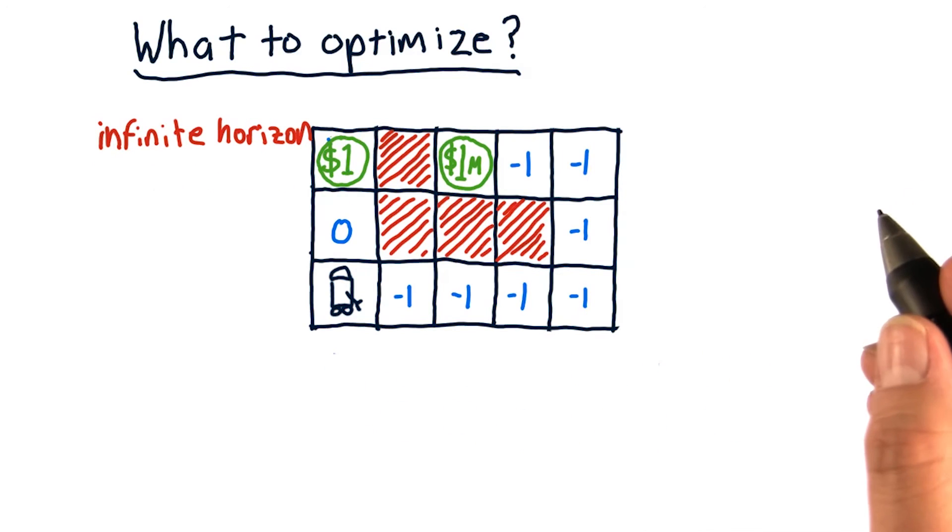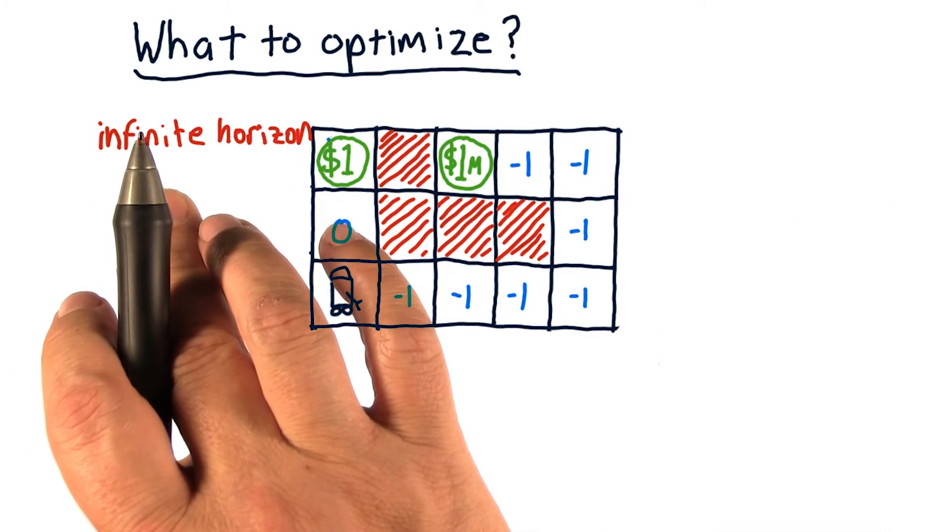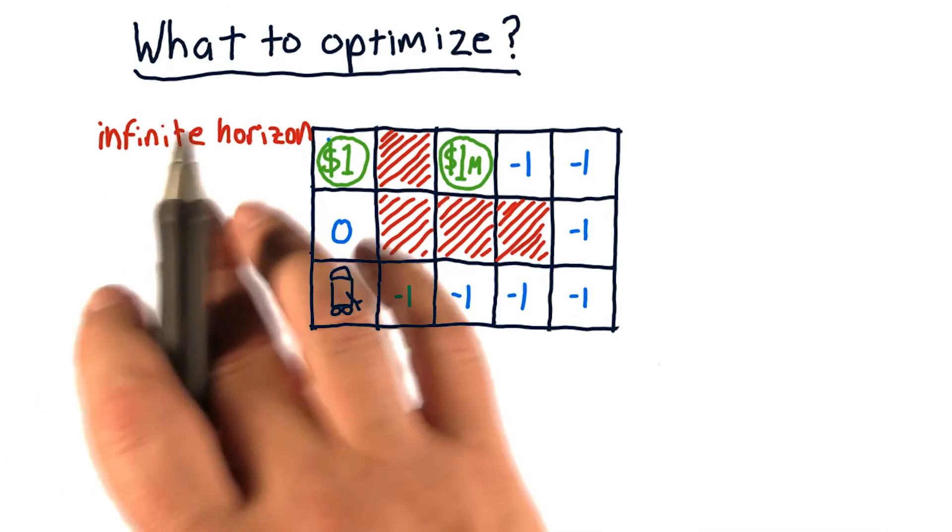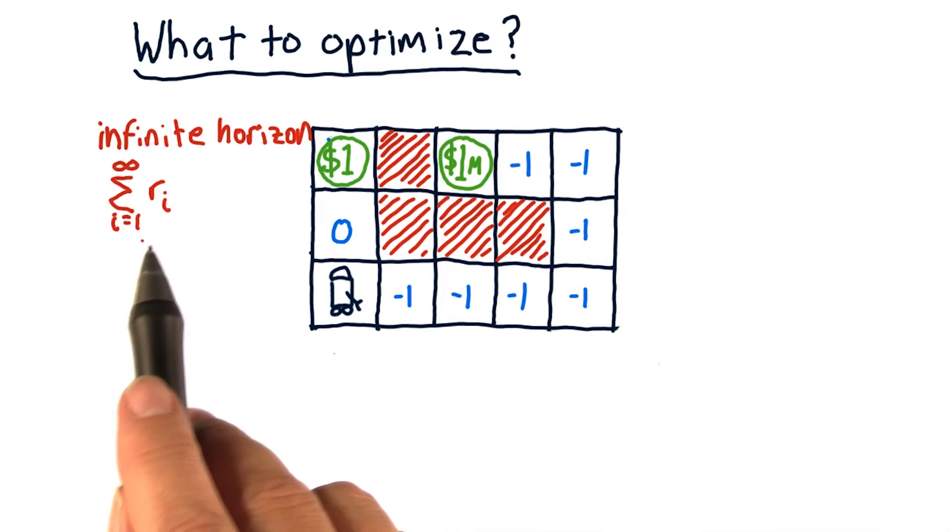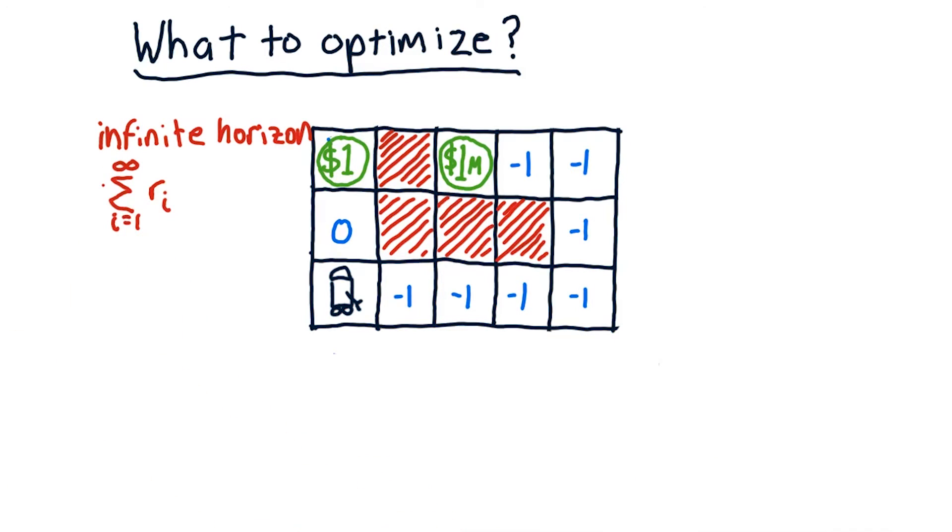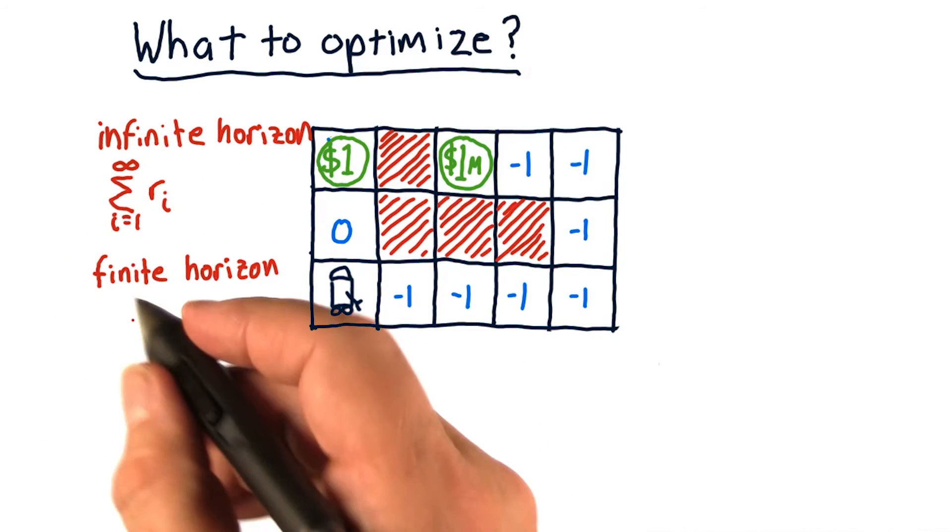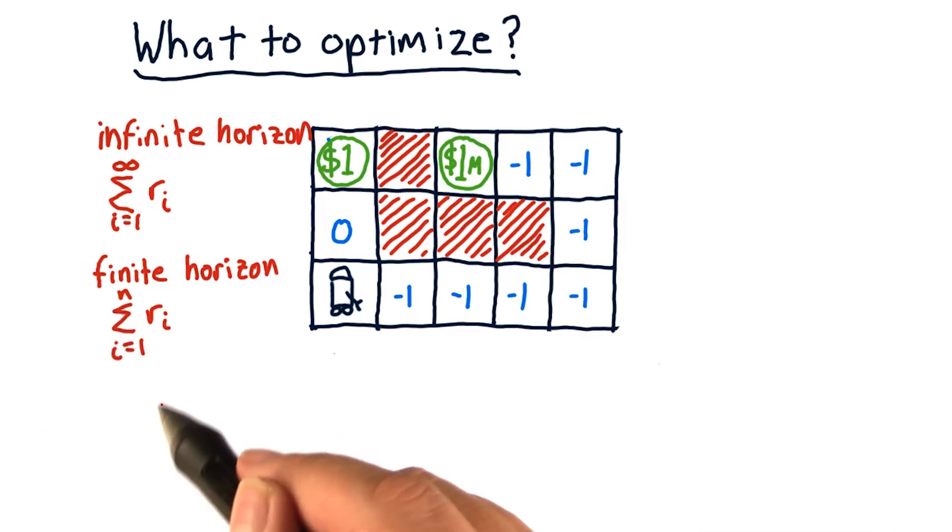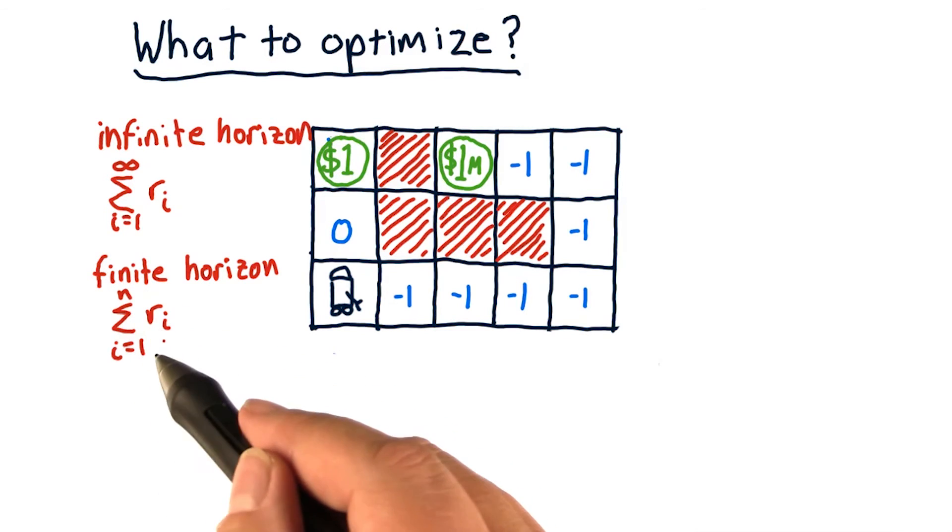Let me formalize these a little bit. With the infinite horizon, what we're trying to maximize is the sum of all rewards over all of the future. So it's the sum of each of these rewards for i equals one to infinity. The finite horizon is very similar, it's just we don't go to infinity. So for optimizing over a horizon of four steps, n would be four. We're just trying to maximize the sum of the reward for the next four steps.